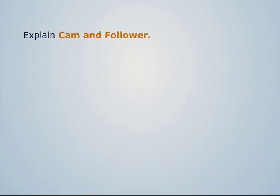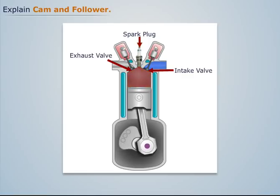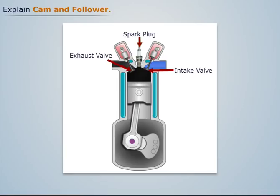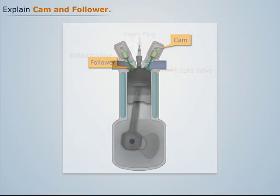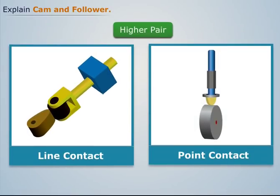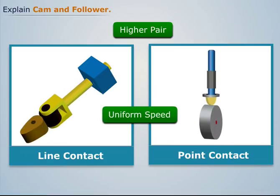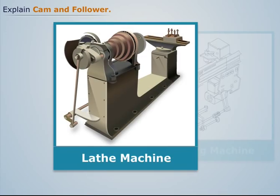In any engine, fuel is injected into the piston and combustion products are exhausted out from the piston by using valves. These valves are opened and closed with the help of a kinematic pair — cam and follower. The cam and follower are always in point or line contact with each other, so this kinematic pair is a higher pair. Cams are rotated at a uniform speed by a shaft, while motion of the follower is determined by the shape of the cam. Similar cam and follower pairs are used in sewing machines, feed mechanisms of automatic lathes, etc.